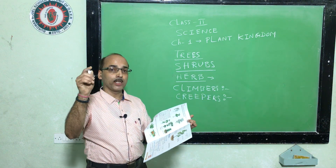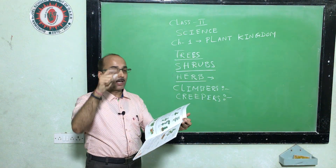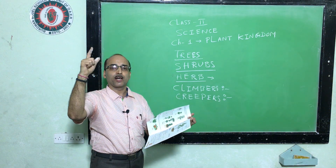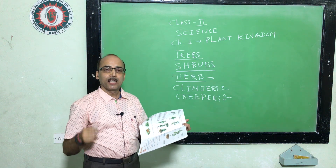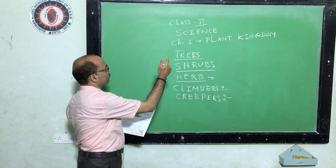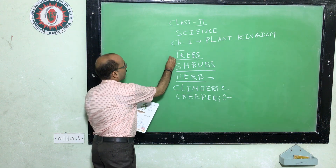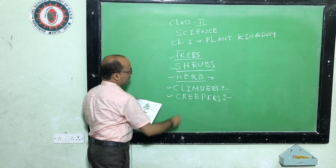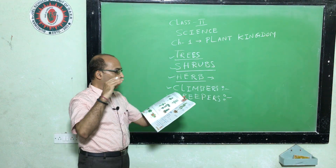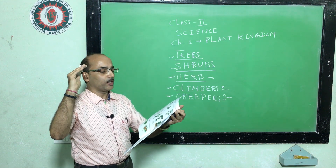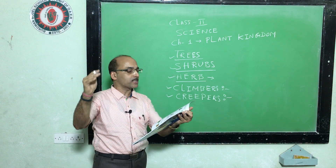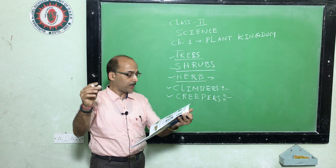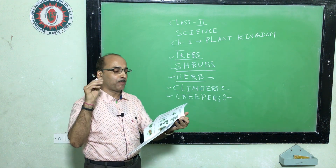Students, we have learned so many types of plants: first trees, then shrubs, then herbs, then climbers, then creepers. Underline the examples and memorize the examples of the different types of plants.